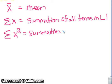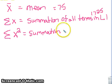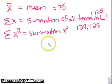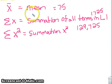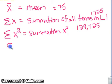If the data was entered correctly, you should have a mean of 75, a summation of 1,725, and a summation of X-squareds of 129,725. The mean is useful — instead of adding all those numbers and dividing, you can use this. But what's really exciting is the Sx value, which is the standard deviation for a sample.